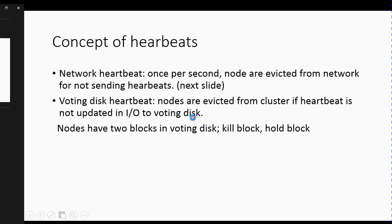For communication between nodes in a RAC environment, you have two concepts: network heartbeat and voting disk heartbeat. The network heartbeat is essentially a signal from one node to another indicating it's still running and still available. If a node is no longer submitting this heartbeat, it's going to be evicted from the network because it failed to signal its availability.